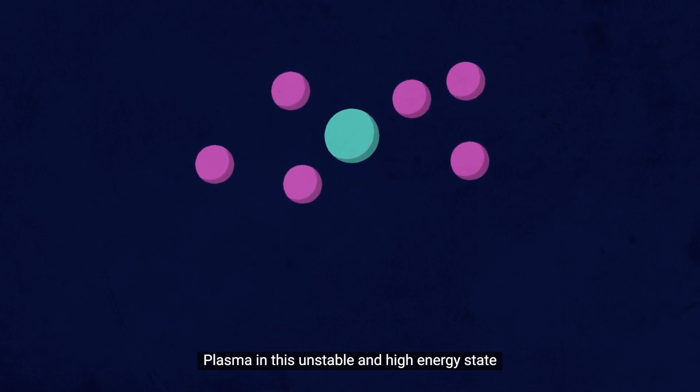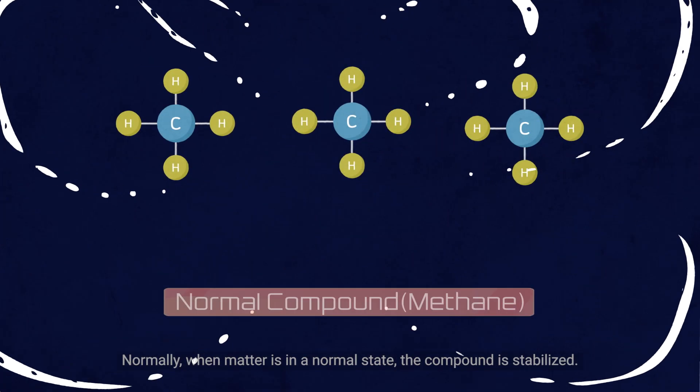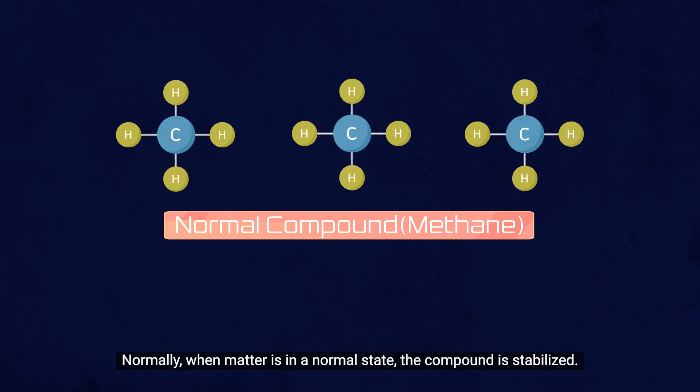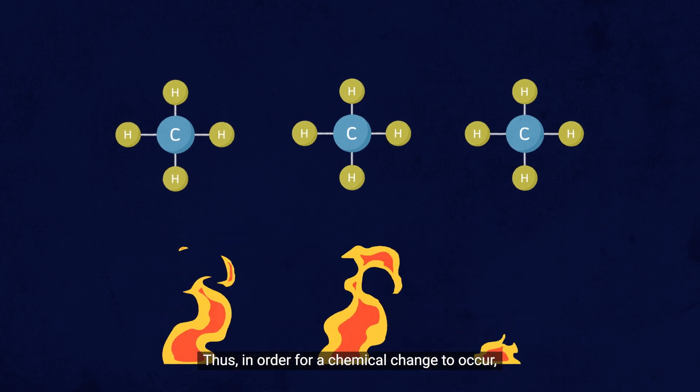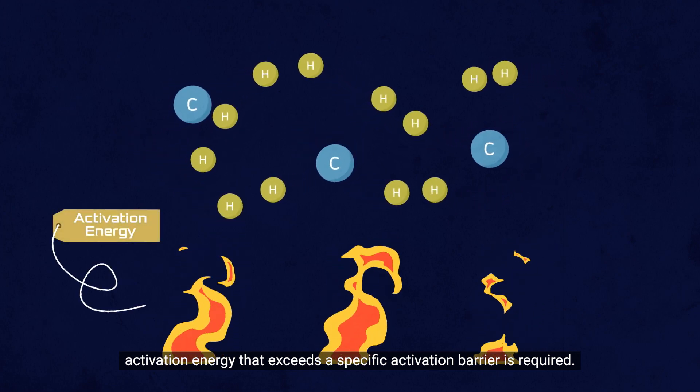Plasma in this unstable and high-energy state causes a somewhat magical phenomenon. Normally, when matter is in a normal state, the compound is stabilized. Thus, in order for a chemical change to occur, activation energy that exceeds a specific activation barrier is required.